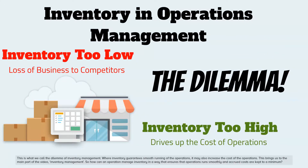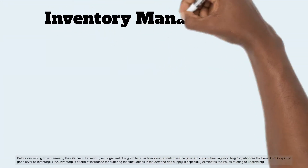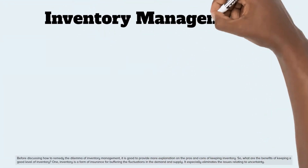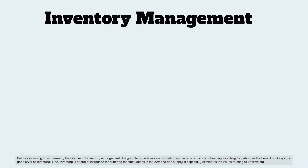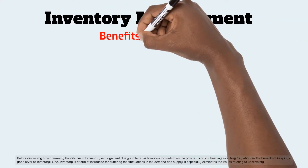This is what we call the dilemma of inventory management — where inventory guarantees smooth running of the operations, it may also increase the cost of the operations. So how can an operation manage inventory in a way that ensures that operations run smoothly and accrued costs are kept to a minimum? Before discussing how to remedy this dilemma, it is good to provide more explanation on the pros and cons of keeping inventory.